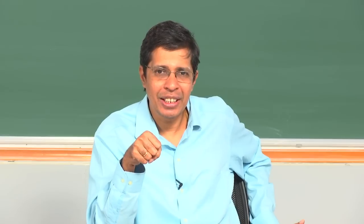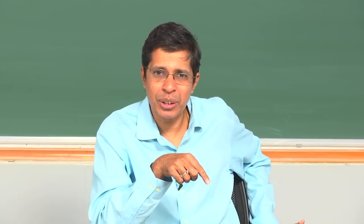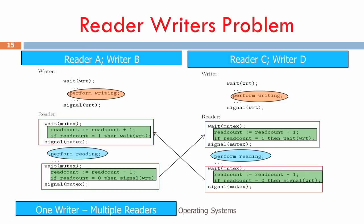Modern processors provide atomic instructions — such as test-and-set and swap instructions — which can be used to implement wait and signal operations. Atomic instruction means it executes completely before anything else. There are implementations of semaphore wait and signal that use these atomic test-and-set and swap instructions. If you look at the instruction sets of contemporary microprocessors from the last two decades, you will find these uninterruptible atomic instructions.